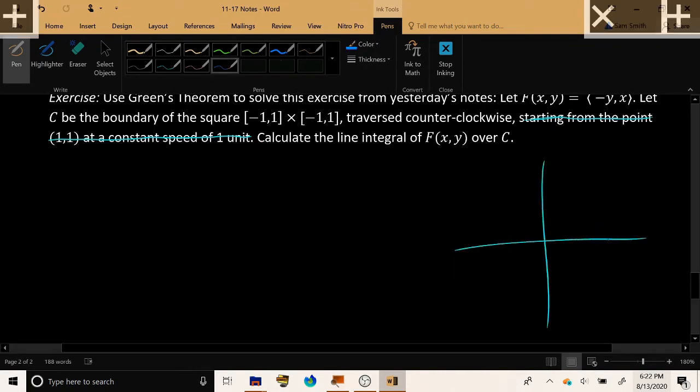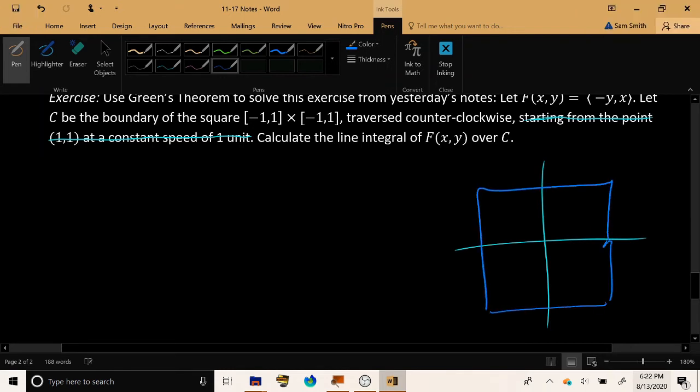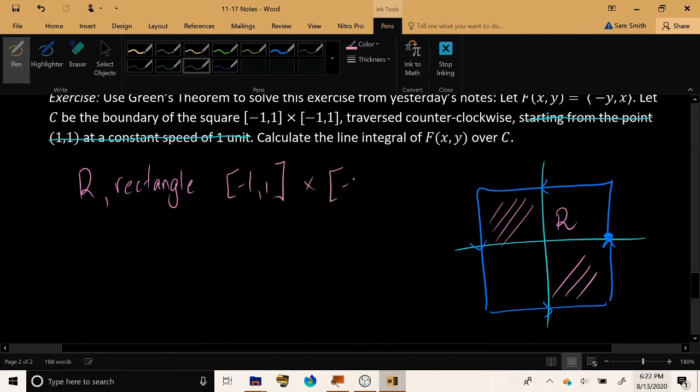But let's do it much more easily this time using Green's theorem. So here is our curve C, traversed counterclockwise exactly once. And that curve C encloses a square called R. R being the rectangle stretching from negative 1 to 1 in the x direction, negative 1 to 1 in the y direction.